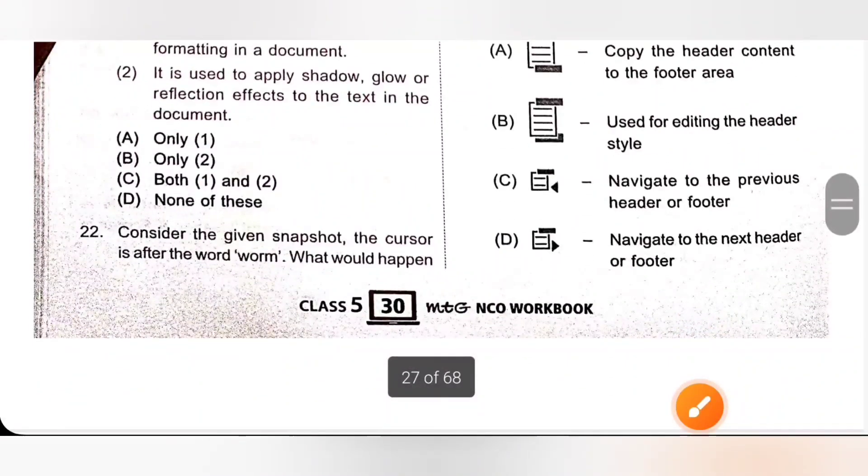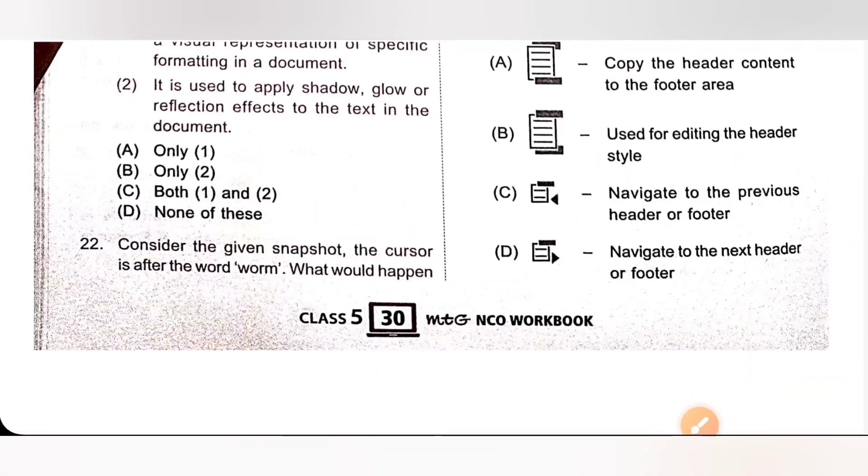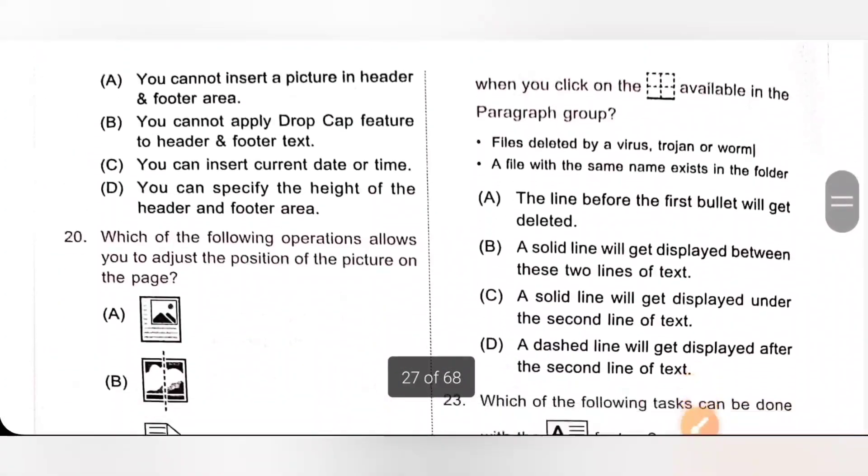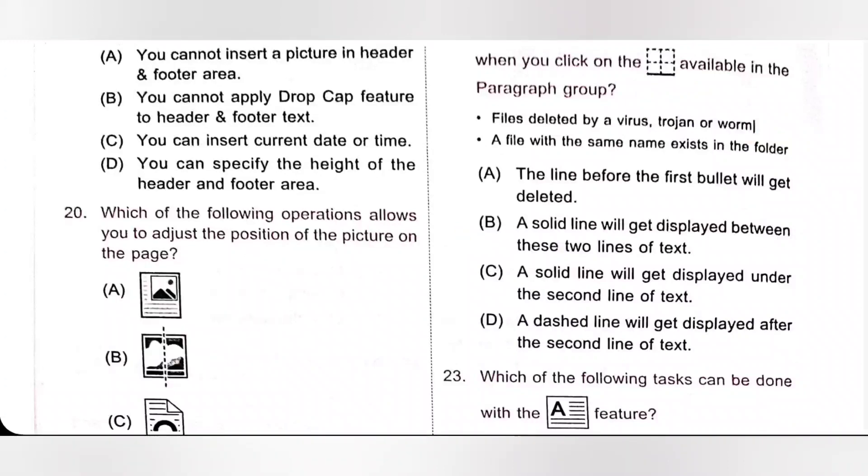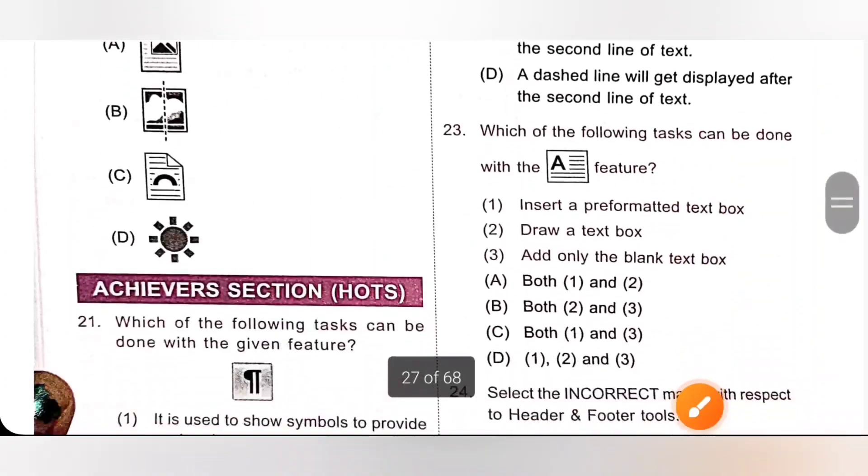Next, 22: Consider the given snapshot. The cursor is after the word warm. What would happen when you click the option available in the paragraph group? The given option is bottom border. It adds a solid line below the current line of the text. Option B is the correct answer: a solid line will get displayed between these two lines of the text.